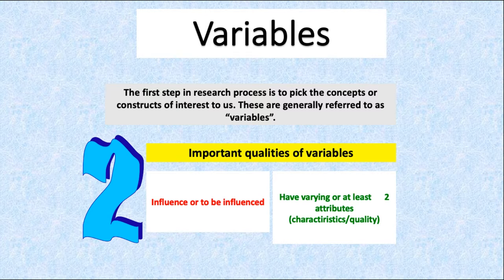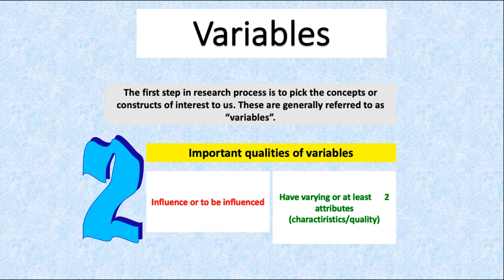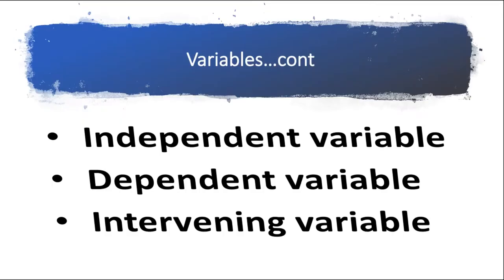These are generally referred to as variables. A variable has important qualities: it either influences or is to be influenced. If the variable influences, we call it the independent variable; if it is to be influenced, we call it the dependent variable. To be a variable, it must have at least two attributes or characteristics — the minimum is a dummy variable where we have yes or no, one or zero. We have three types: independent variables, which influence the dependent variable, and dependent variables, which are to be influenced.